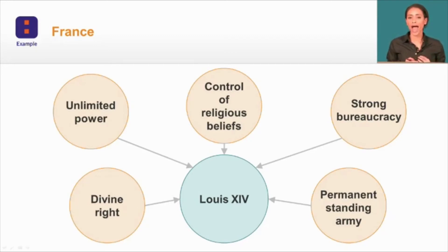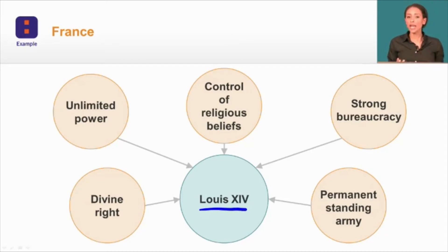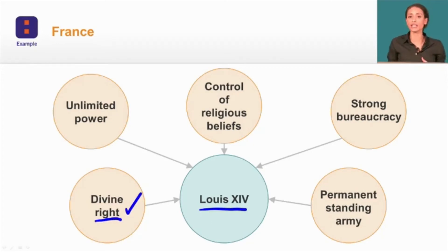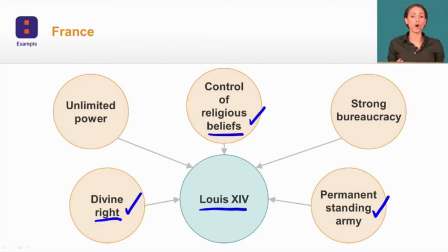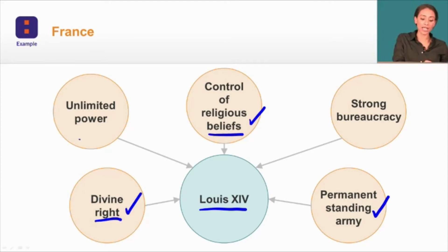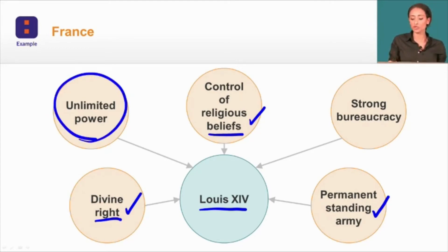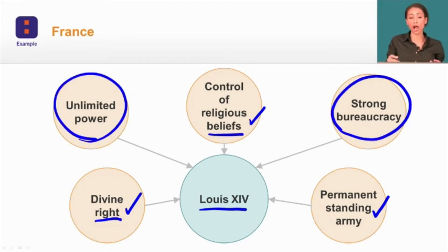Here are the characteristics of absolute rule in France under King Louis XIV. Like many absolute rulers, he believed in his divine right to rule over the French people — that God gave him this right. He created a permanent standing army to wield unlimited power, specifically to control religious beliefs by imposing Catholicism on all people of France. And because of his belief in unlimited power, he utilized a strong central government, a strong bureaucracy, and a court that supported his rule indefinitely.